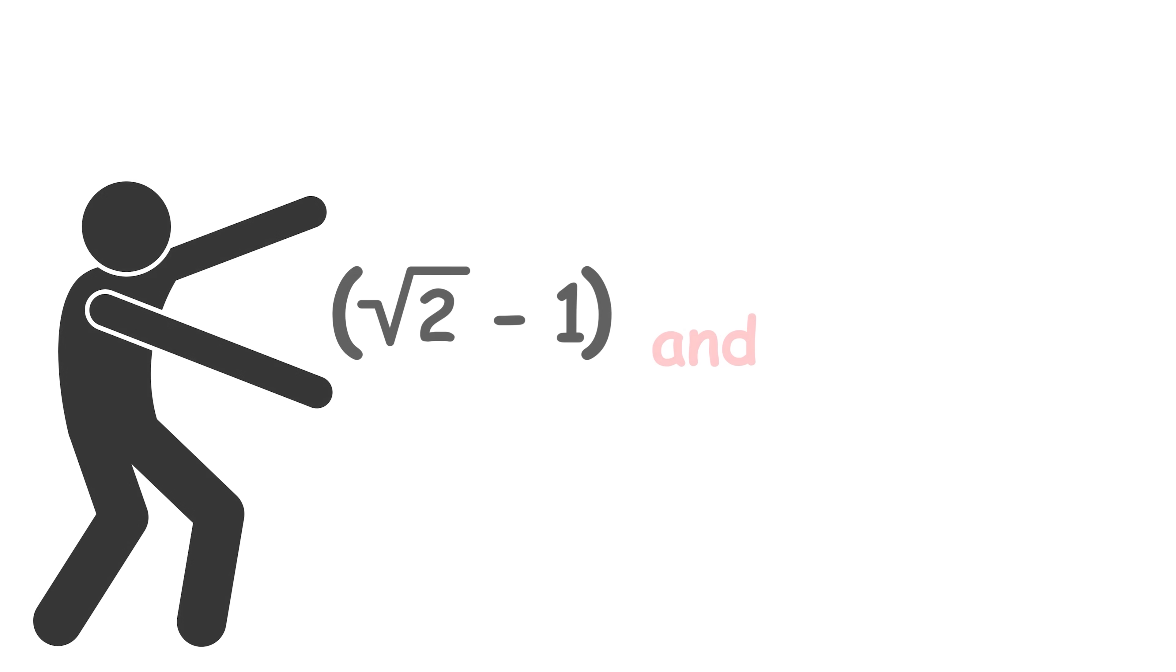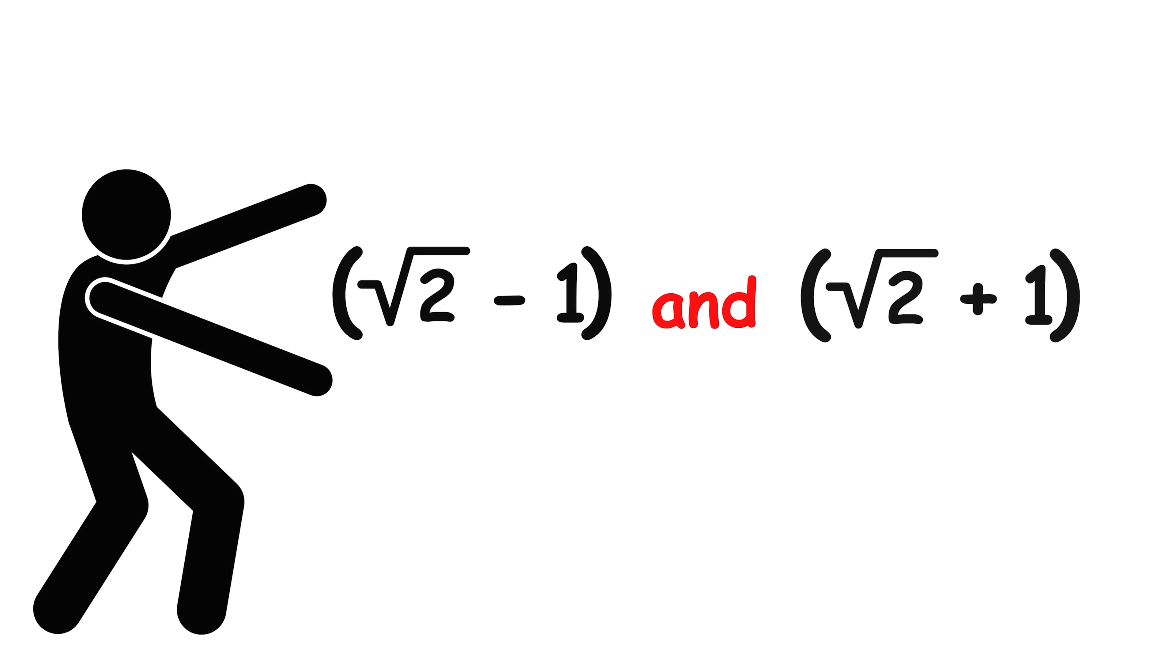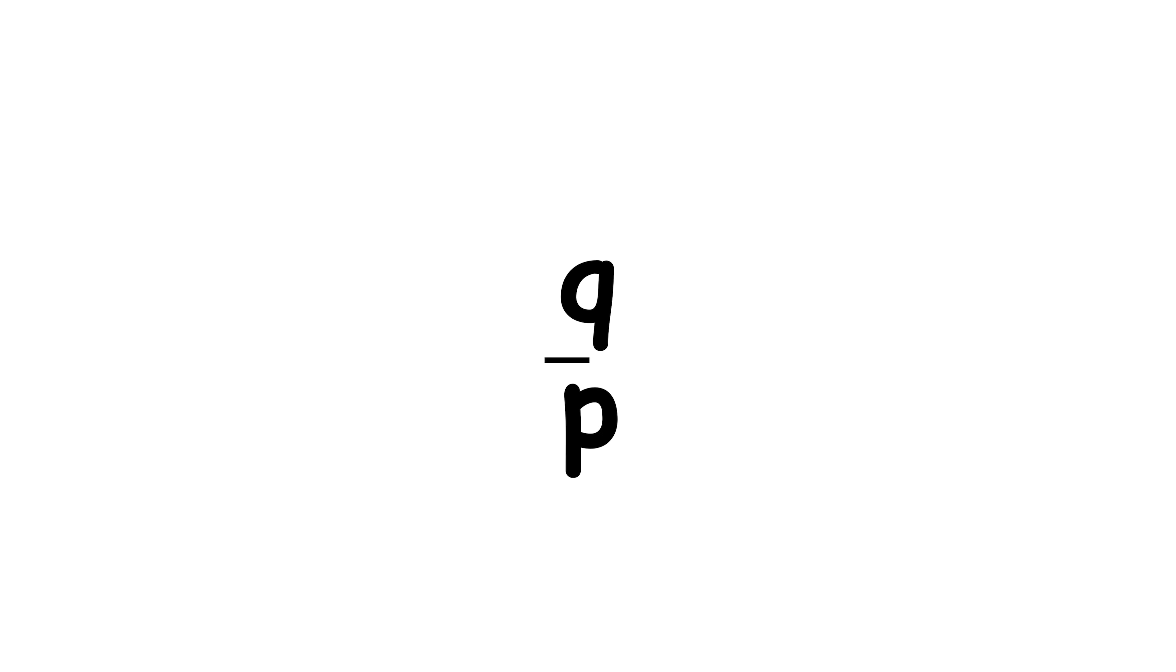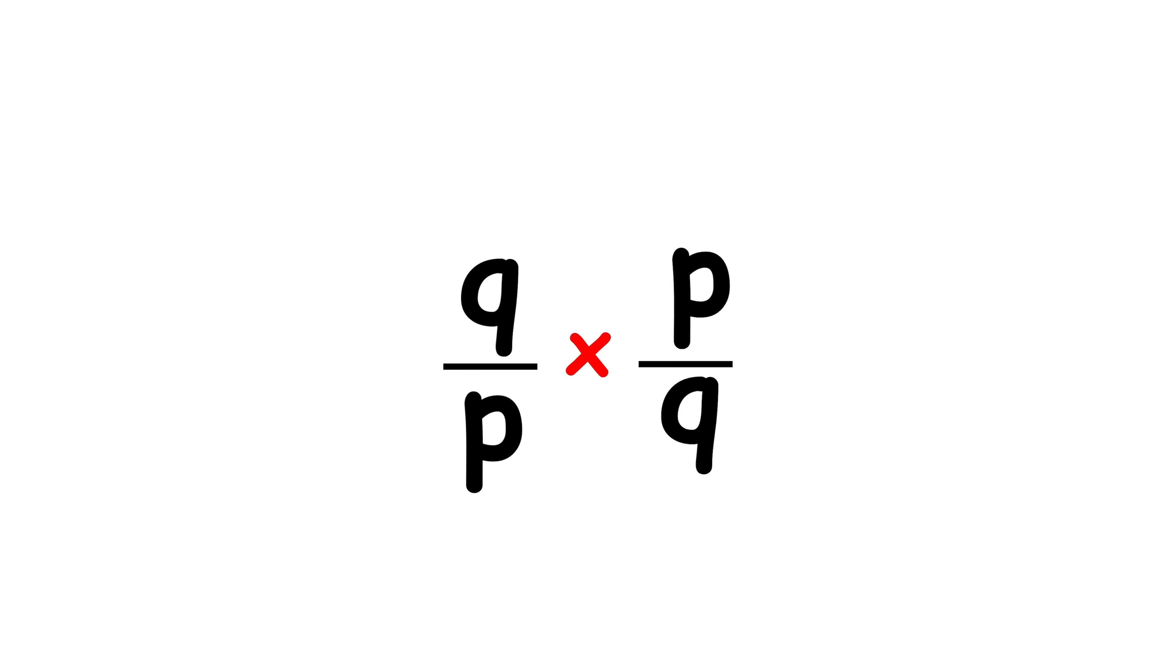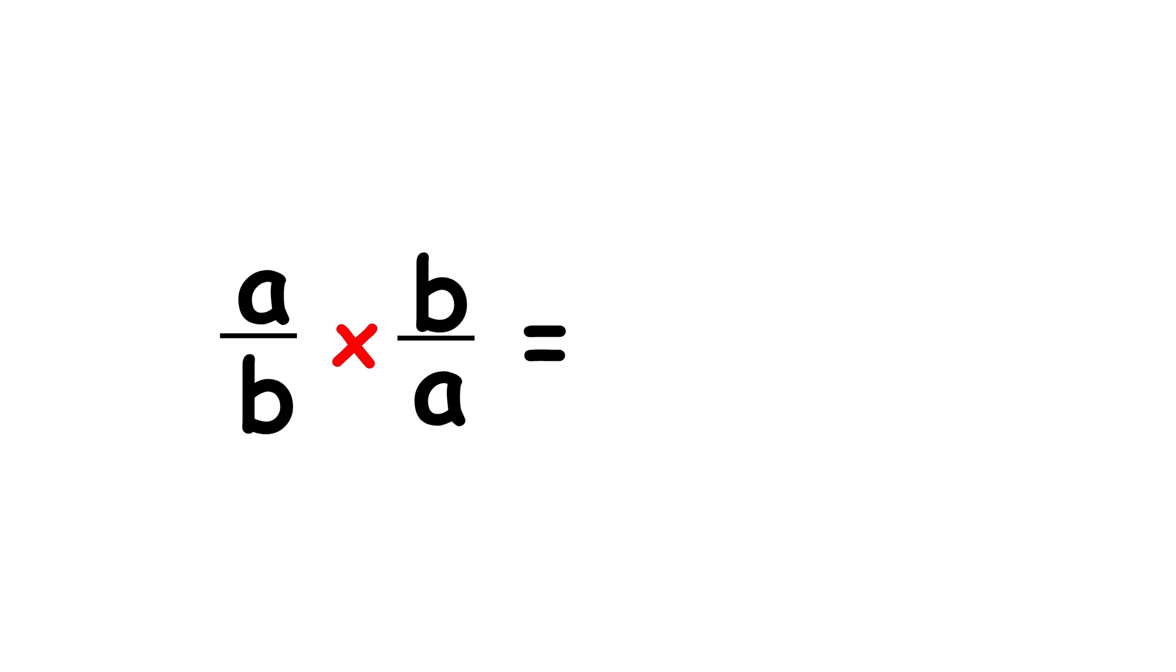So what do you call two numbers that can be multiplied together to get the number 1? Those are called reciprocals. So we just showed that square root 2 minus 1 and square root 2 plus 1 are reciprocals of each other. You can obtain the reciprocal of a fraction by just flipping the numerator and denominator, which can be shown by a simple calculation. a over b times b over a equals ab over ab equals 1.